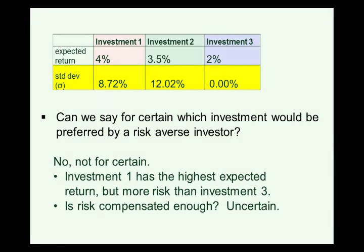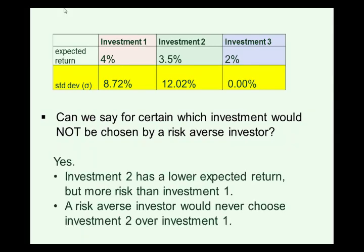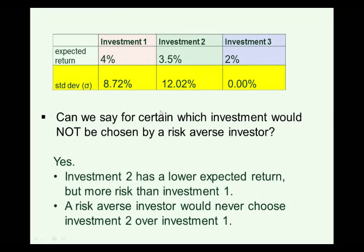What about investment two? Can we say for certain which investment would not be chosen by a risk-averse investor? The answer is yes — investment two. Investment two has a lower expected return than investment one (3.5% vs. 4%), but at the same time has a significantly higher standard deviation. So it offers less reward and more risk. Investment two with a lower expected return and higher risk is clearly inferior to investment one. A risk-averse investor would never choose investment two over investment one — given the choice between these two, a risk-averse investor will never choose investment two.